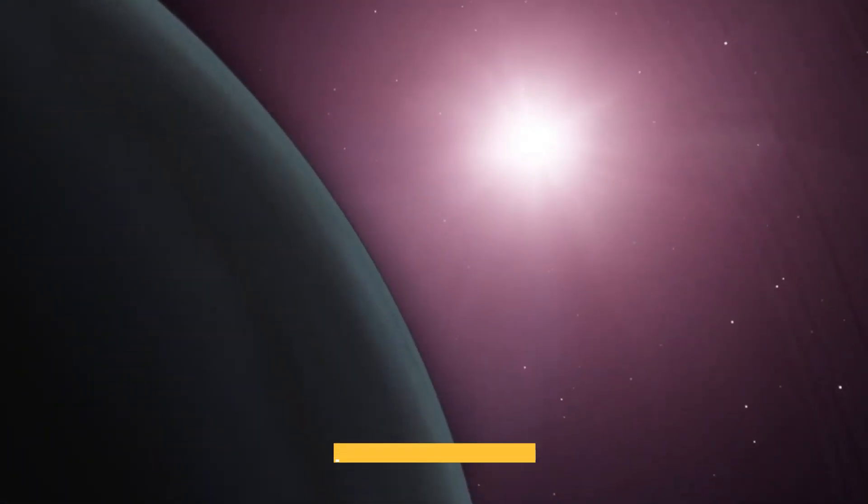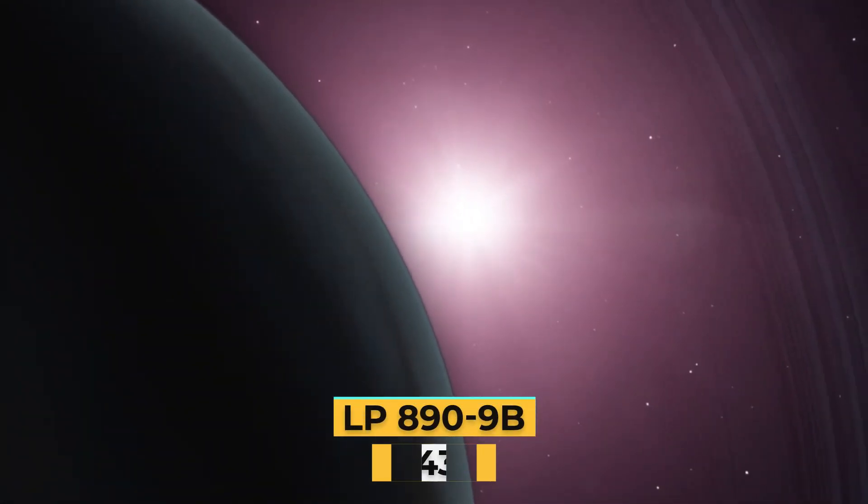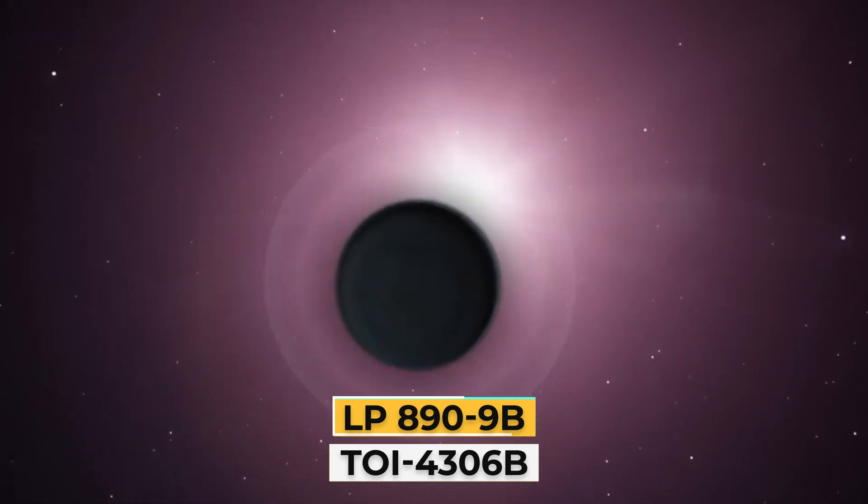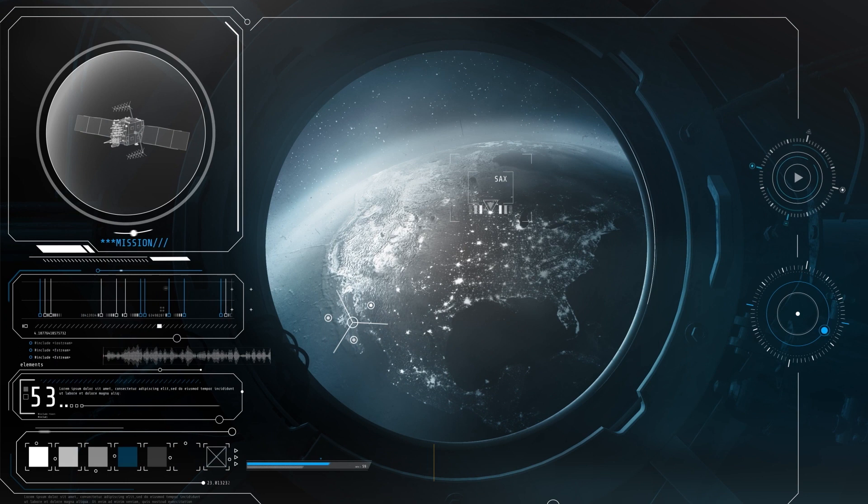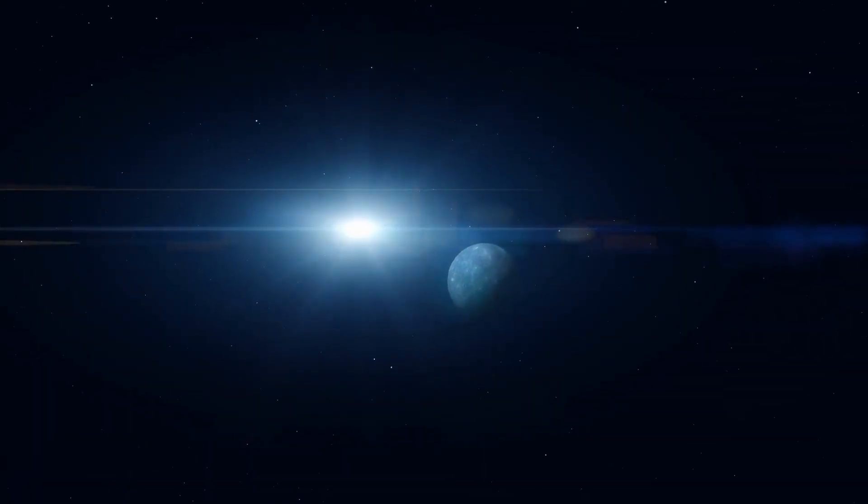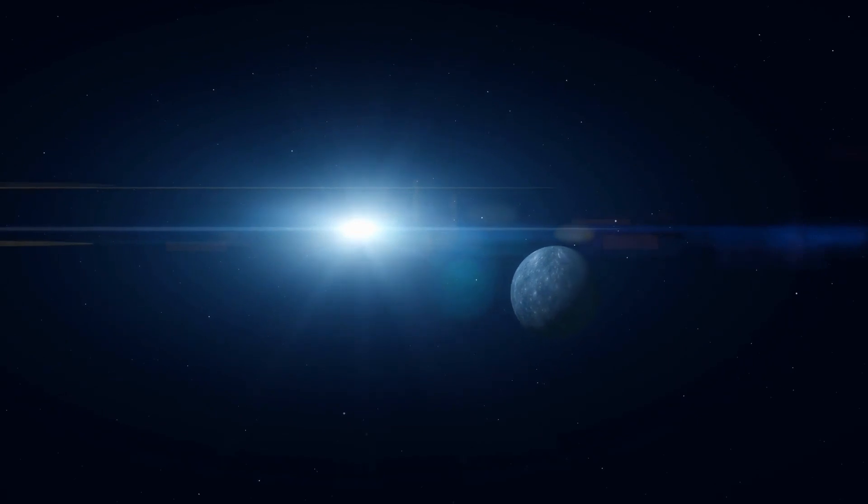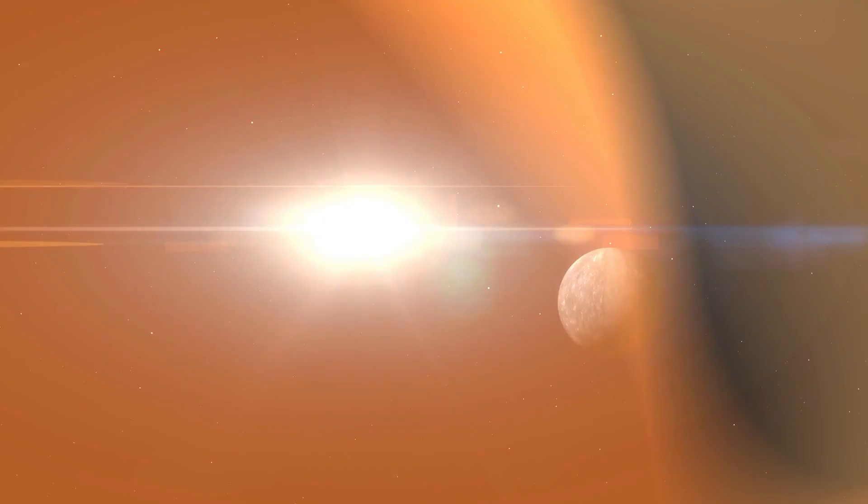The planet was dubbed LP 890-9b, or TOI-4306b, which is about 30% bigger than Earth. On the other hand, although it orbits quite close to its star, its star has half the temperature of our Sun and is 6.5 times smaller than our Sun.